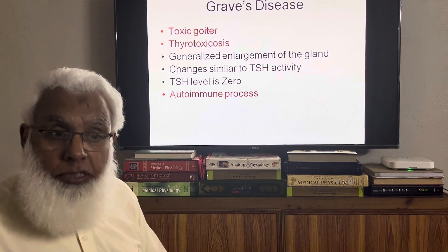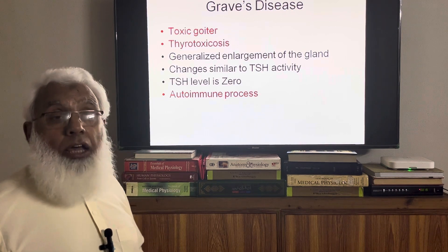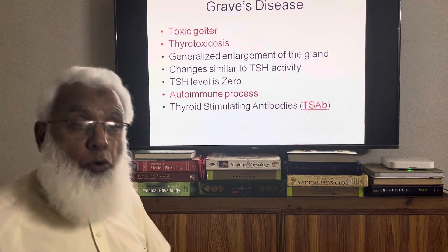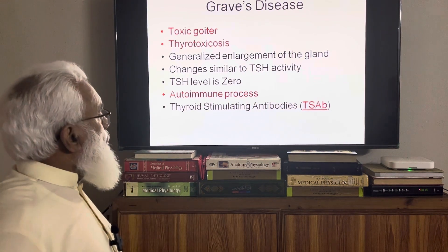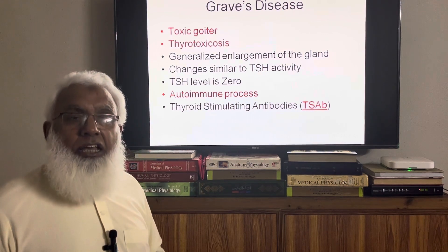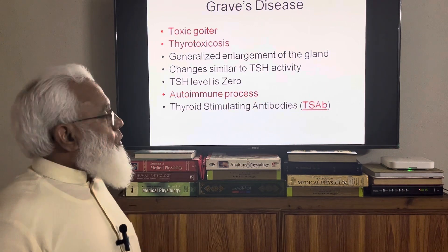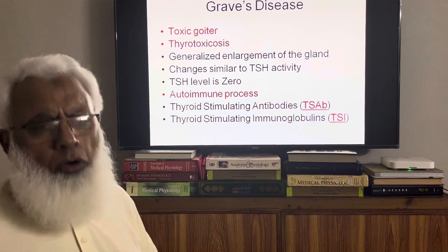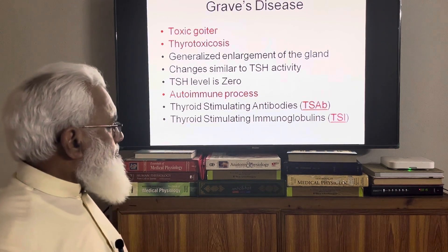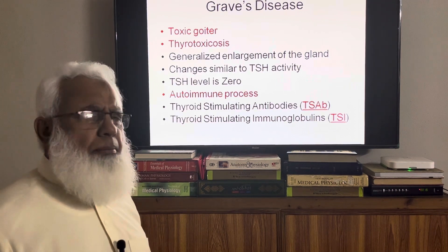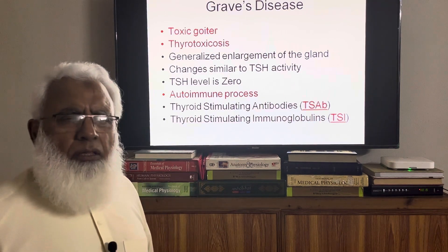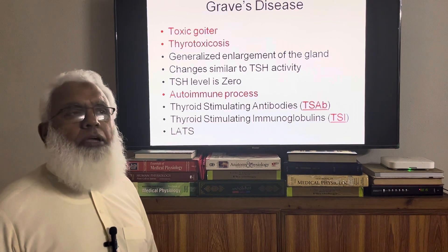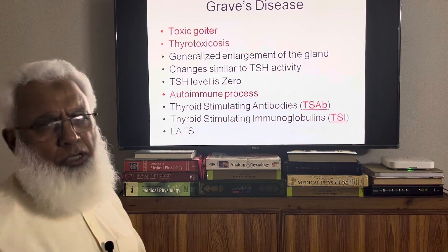Graves' disease is an autoimmune disease. There are antibodies produced against thyroid cells, and these antibodies initially stimulate like TSH — they act like TSH. They are known as thyroid stimulating antibodies (TSAb). They are also called thyroid stimulating immunoglobulins (TSI). Previously, when the autoimmune mechanism was unknown, they were called LATS — Long-Acting Thyroid Stimulator.